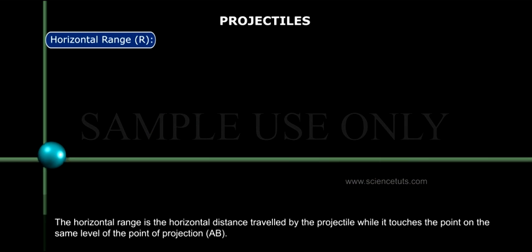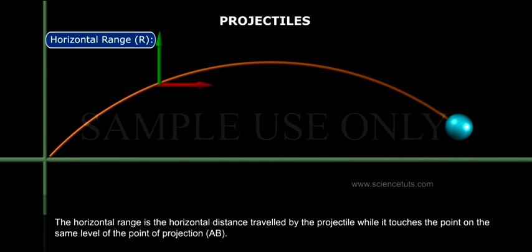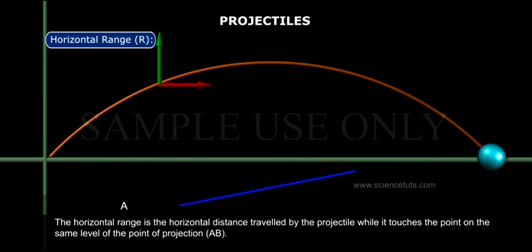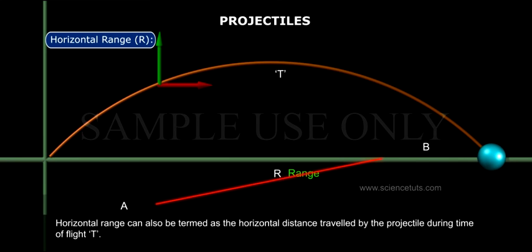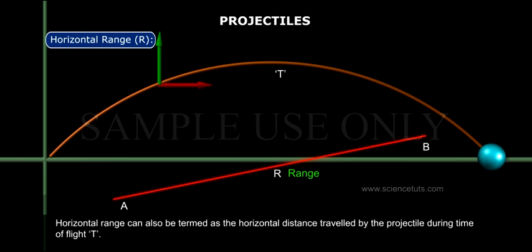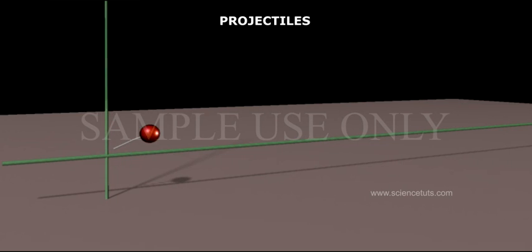Horizontal range is the horizontal distance travelled by the projectile while it touches a point on the same level as the point of projection, AB. It can also be termed as the horizontal distance travelled during the time of flight t. Range R = u² sin2θ / g.